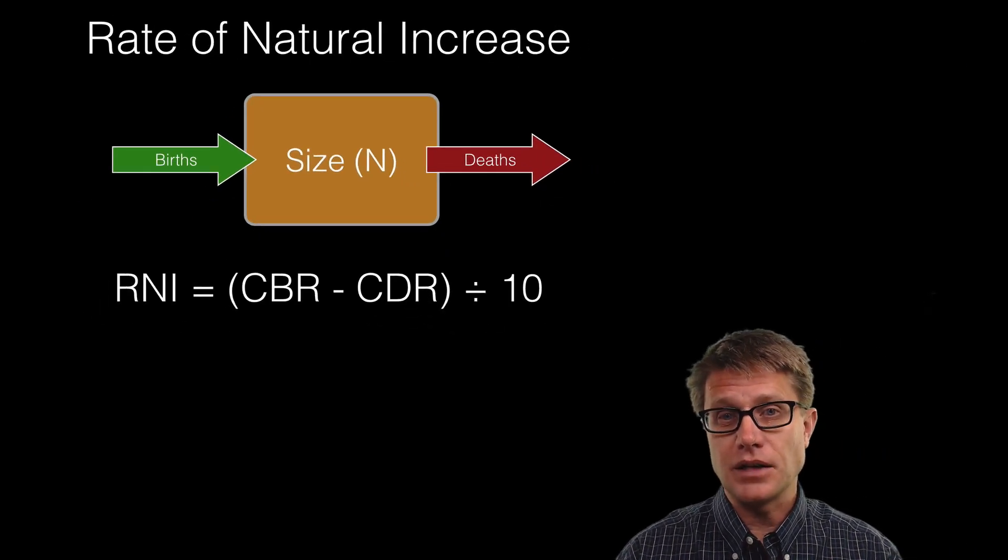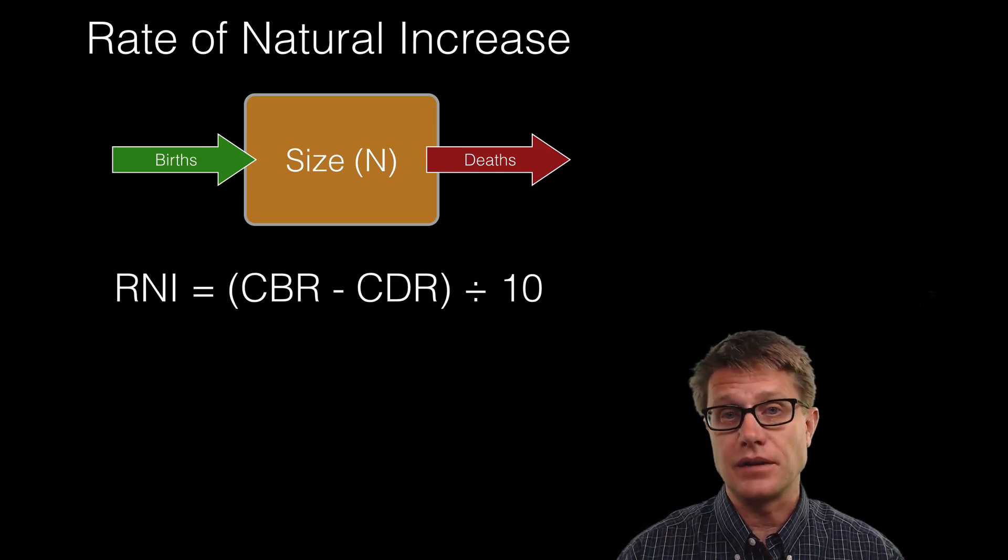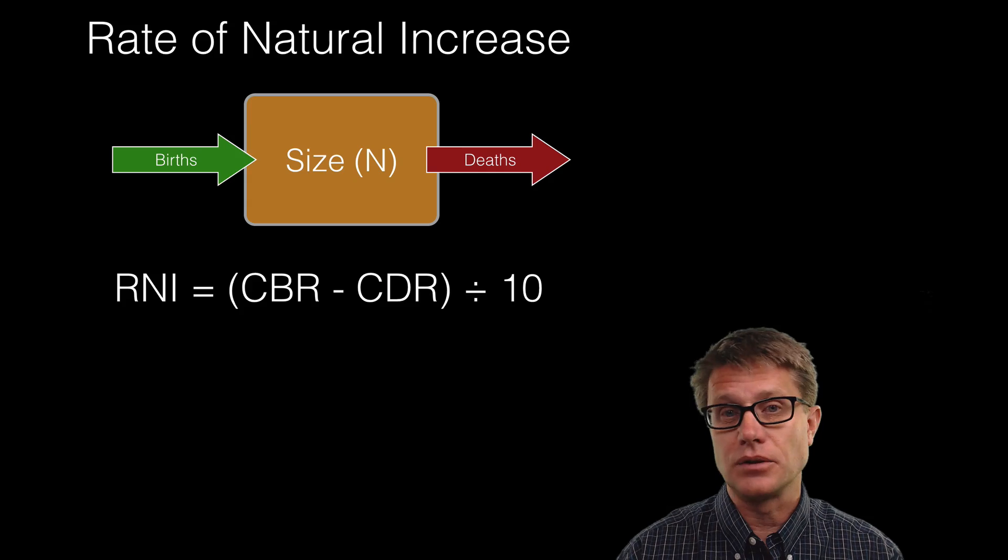And so if we look at the basic level, what is increasing a population? Births. What is decreasing it? Deaths. And so we have what is called the rate of natural increase.